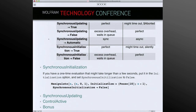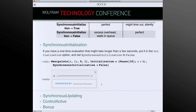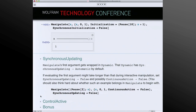Here we have a long-running evaluation with SynchronousInitialization set to false so it can complete on time. Manipulate has an additional nice user-interface element — a barber pole indeterminate progress indicator on different platforms — saying I'm busy, come back and see me later. And we see that the initialization is successfully completed. Likewise for SynchronousUpdating.